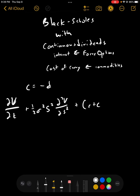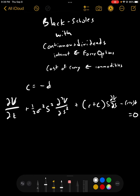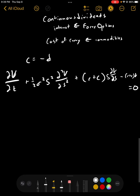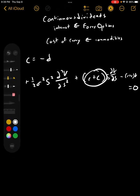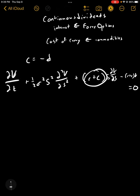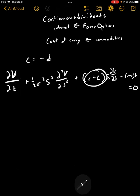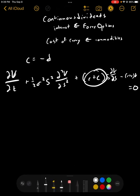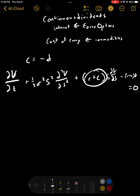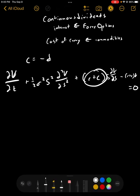Plus, now we have r plus c times s dV/dS minus r plus c again, V, and that's all equal to zero. Because you are paying this, it becomes a positive here. There we go.